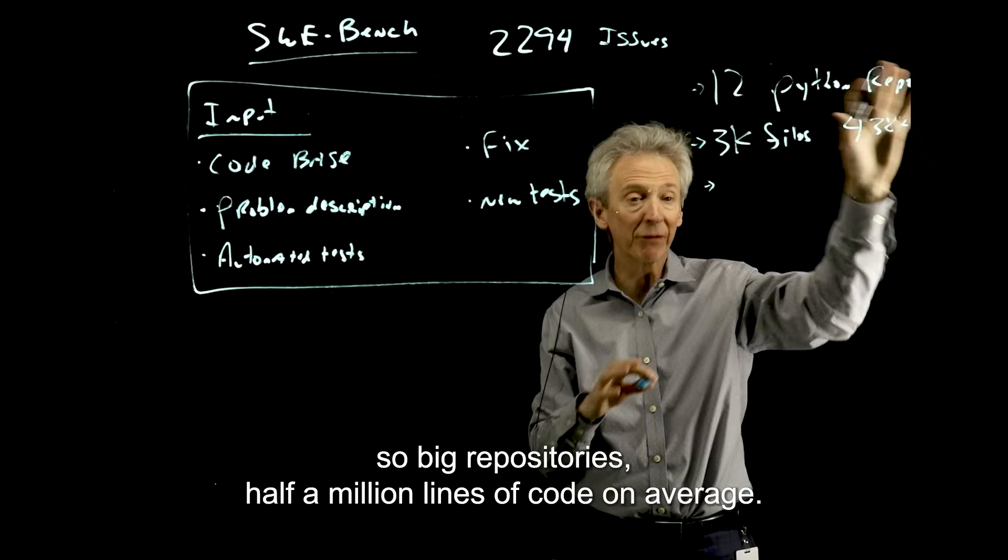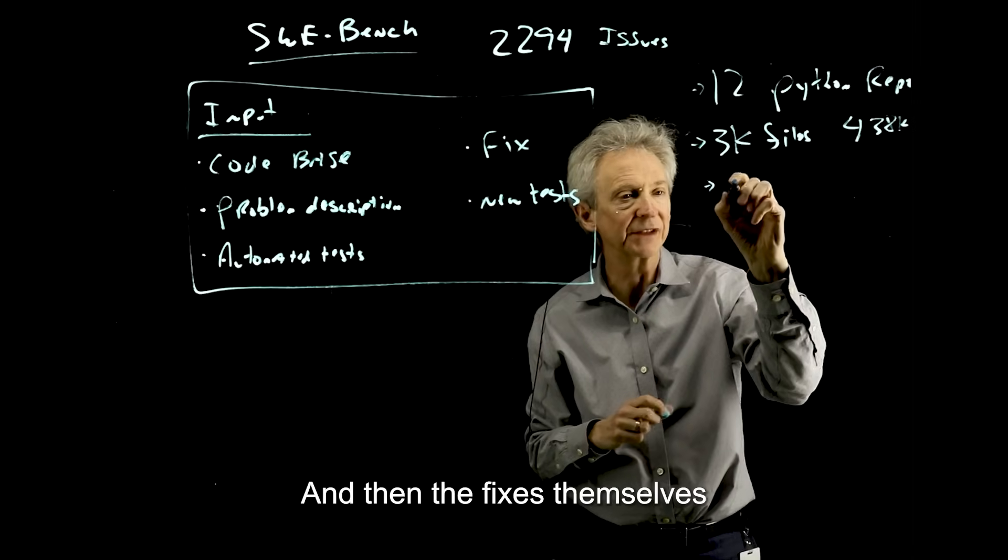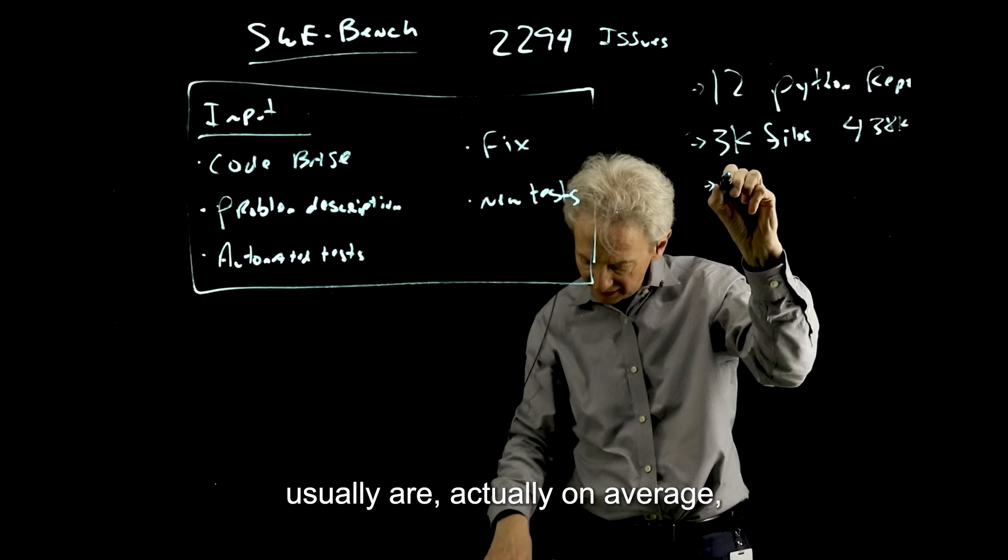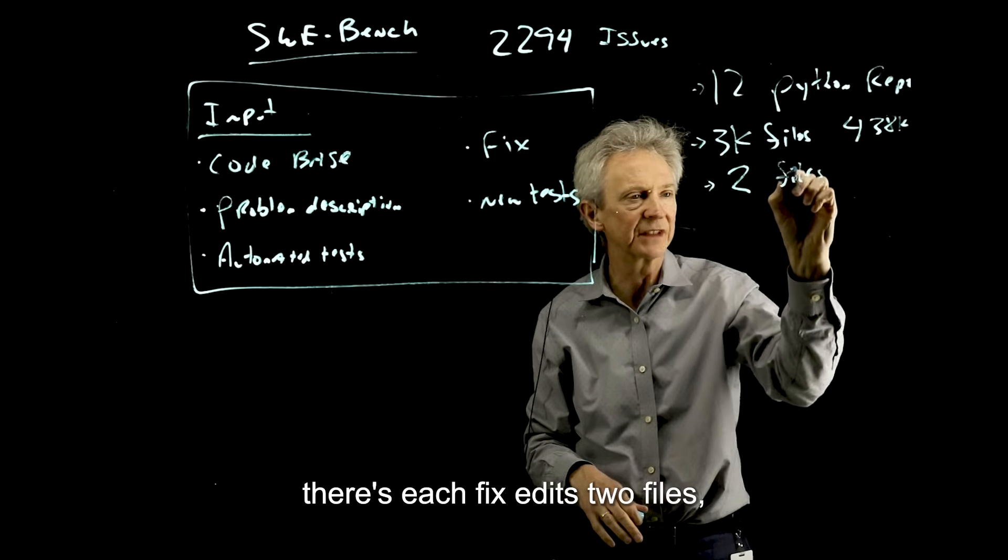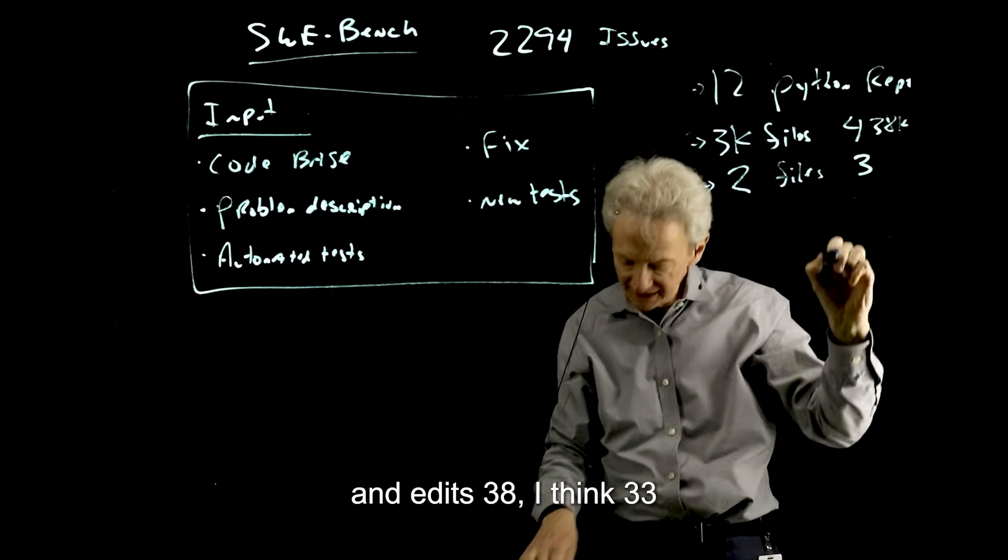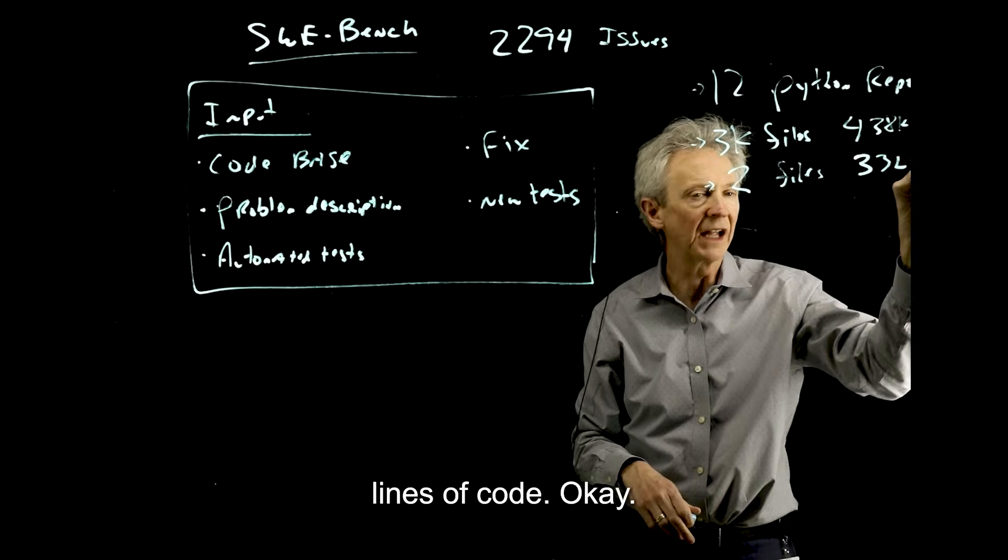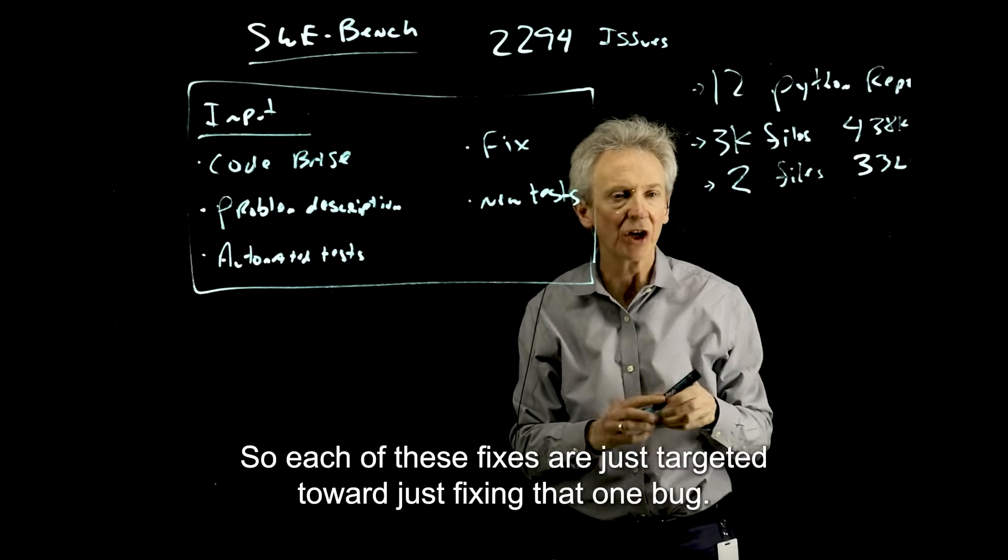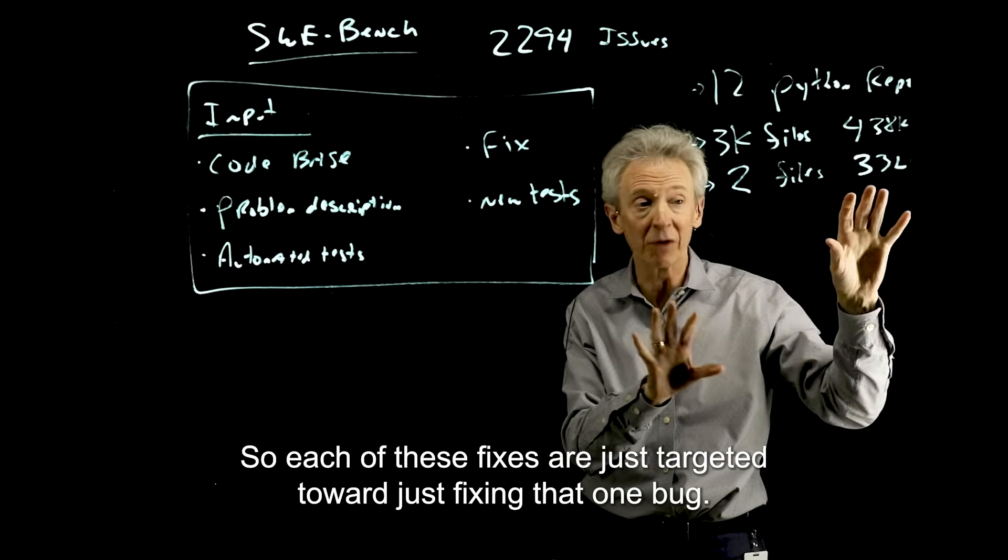So big repositories, half a million lines of code on average. And then the fixes themselves usually are, on average, each fix edits two files and edits 33 lines of code.